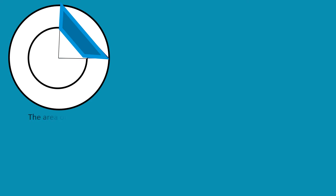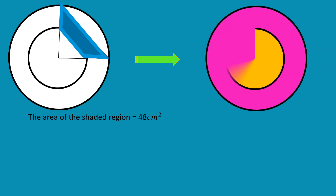Let's try to figure out how to get the area of the shaded region. The only given is the area of the shaded region, which is 48 square centimeters. Notice that there are two circles here — we have a bigger circle and a smaller one — and that there are also two triangles: a bigger triangle and a smaller one.